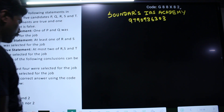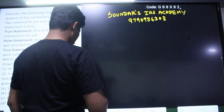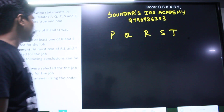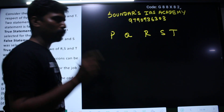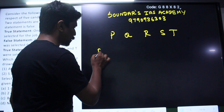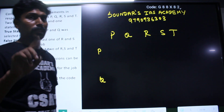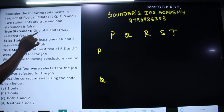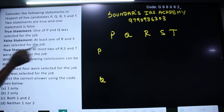In the case of P, Q, R, S, D — which was selected for the job. This is the true statement: one of P and Q was selected for the job. At most two of R, S, D were selected for the job.